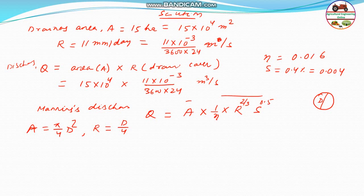Therefore Q will be equal to pi by 4 d square into 1 by n into r, which is d by 4 to the power 2 by 3, and S to the power 0.5. Now everything is known, only d is not known, so we put values in the equation.